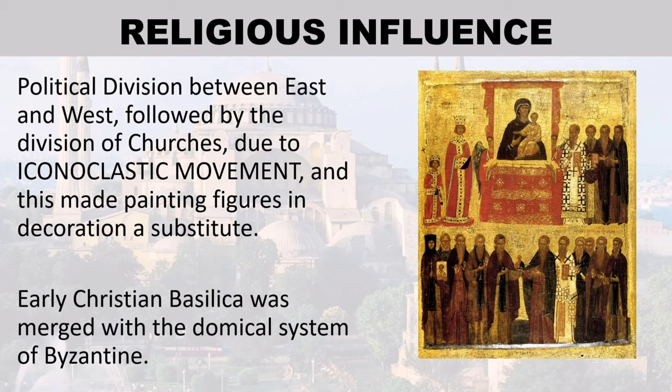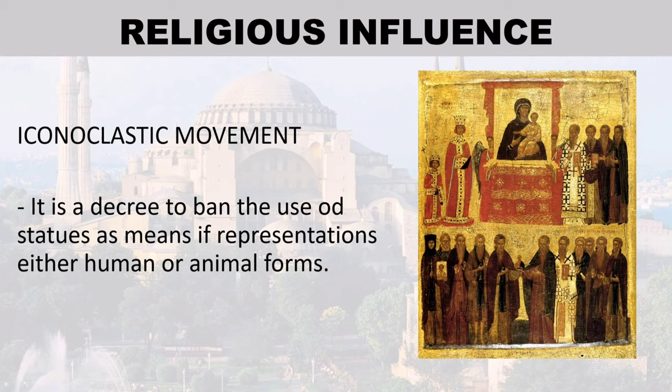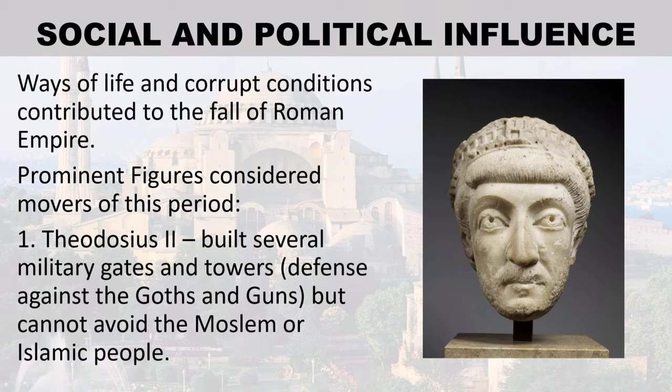Religious influence: political division between east and west was followed by the division of churches due to the iconoclastic movement, which made painting figures in decoration a substitute for statues. Early Christian basilica was merged with the domical system of Byzantine architecture. The iconoclastic movement was a decree to ban the use of statues as representations of human or animal forms. Social and political conditions and corrupt ways of life contributed to the fall of the Roman Empire.